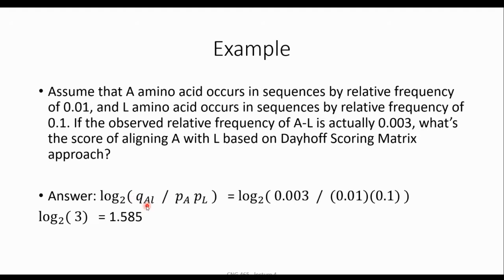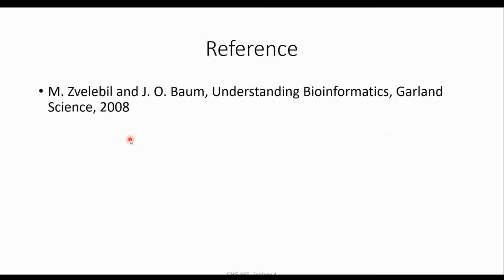The observed relative frequency for the co-occurrence of A and L together — Qal — is given as 3 over 1000. Using the DAYHOFF formula, the score is the logarithm base 2 of Qal divided by (Pa times Pl). So that is (3/1000) divided by (1% times 1%), which equals (3/1000) / (1/10000) = 3. So the score for aligning A with L inside the scoring matrix is 3.